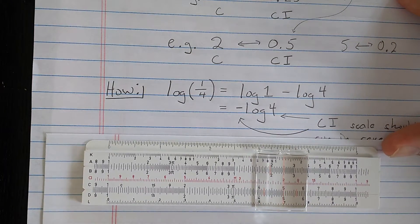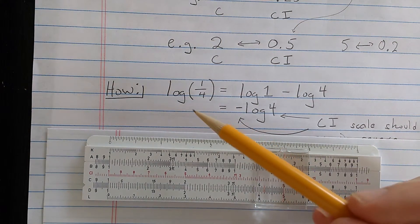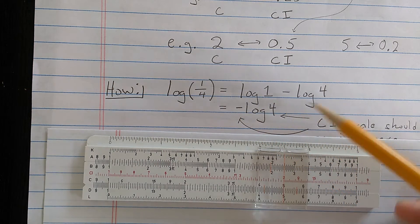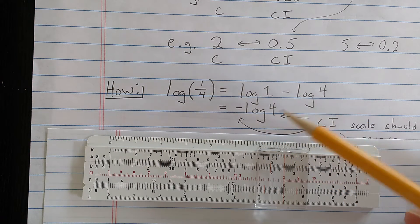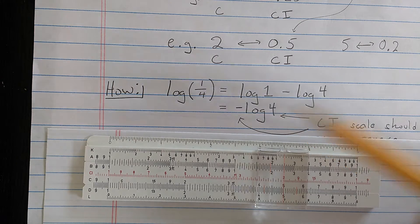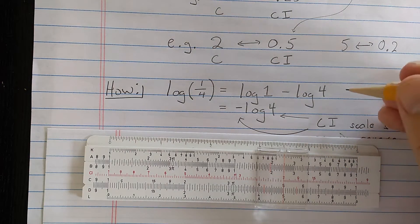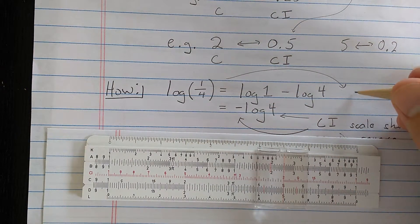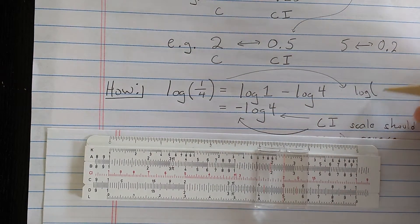Now, how does this work? So let's see, what if I want to compute log of 1 over 4? I know from the log rules, this should be log of 1 minus log of 4. Log of 1 is 0.